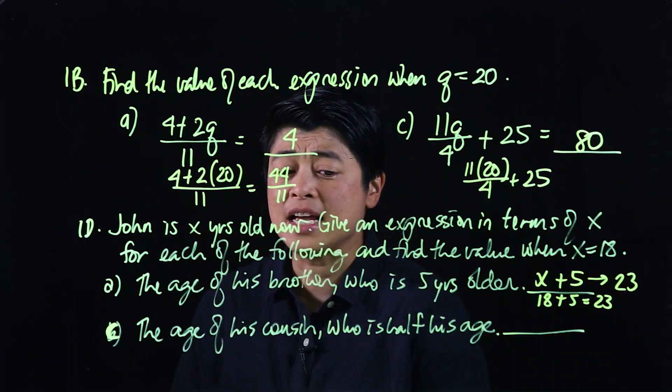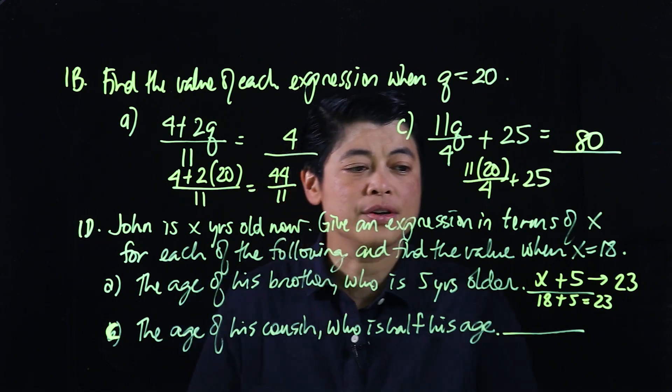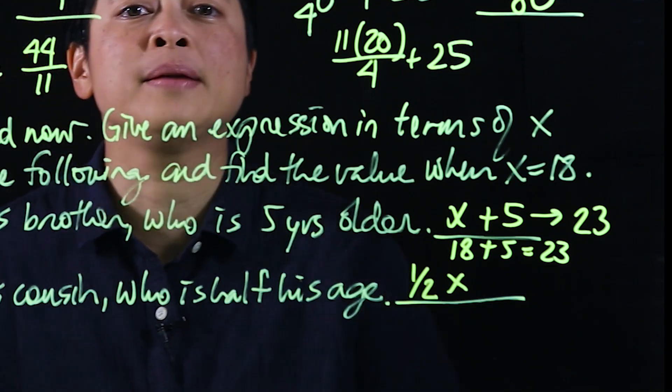So in letter C, it says the age of his cousin who is half his age. So that means this will be 1 half x or 1 half times x.